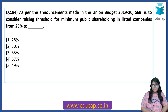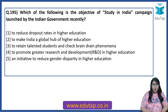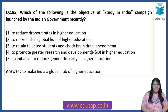As per announcements in the Union Budget 2019-20, SEBI is to consider raising the threshold for minimum public shareholding in listed companies from 25% to 35%. It has been considered to be increased. Which of the following is the objective of the Study in India campaign launched by the Indian government? The correct option is to make India a global hub of higher education.